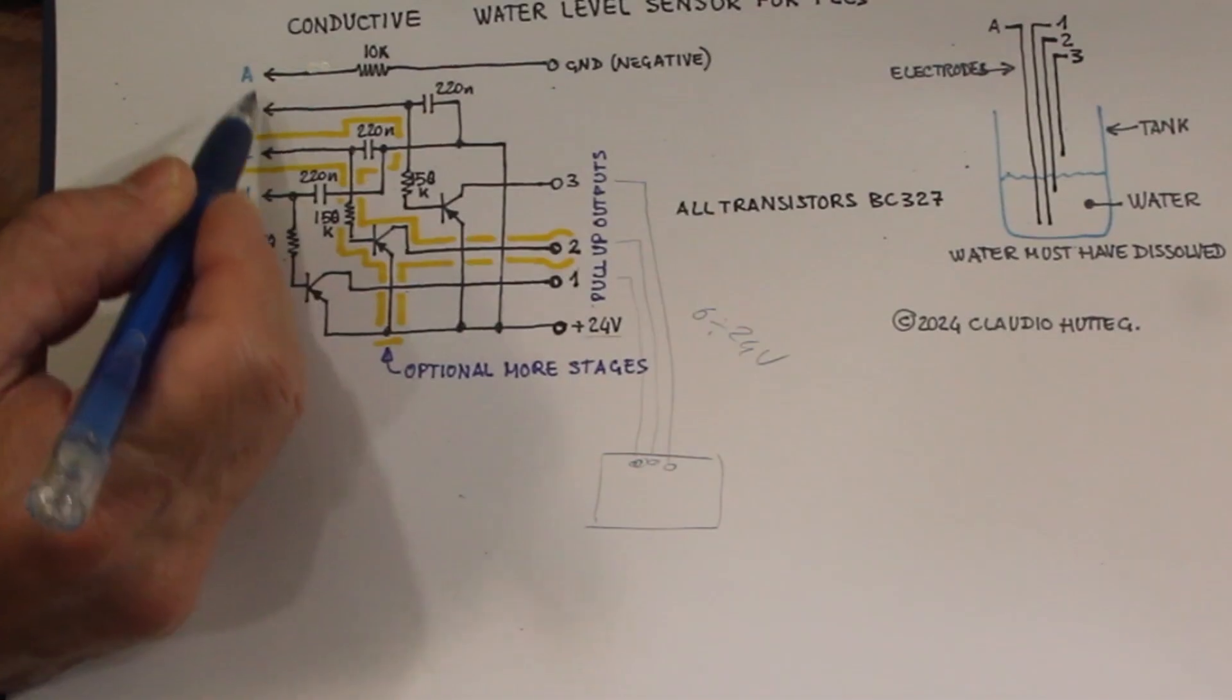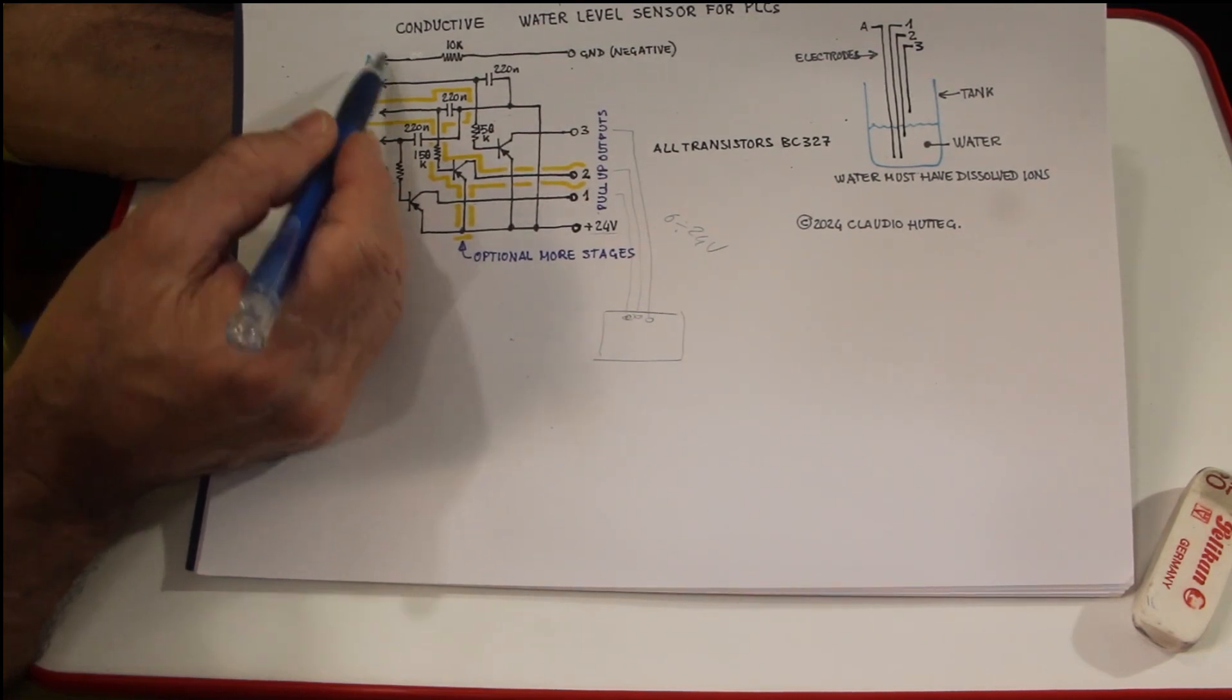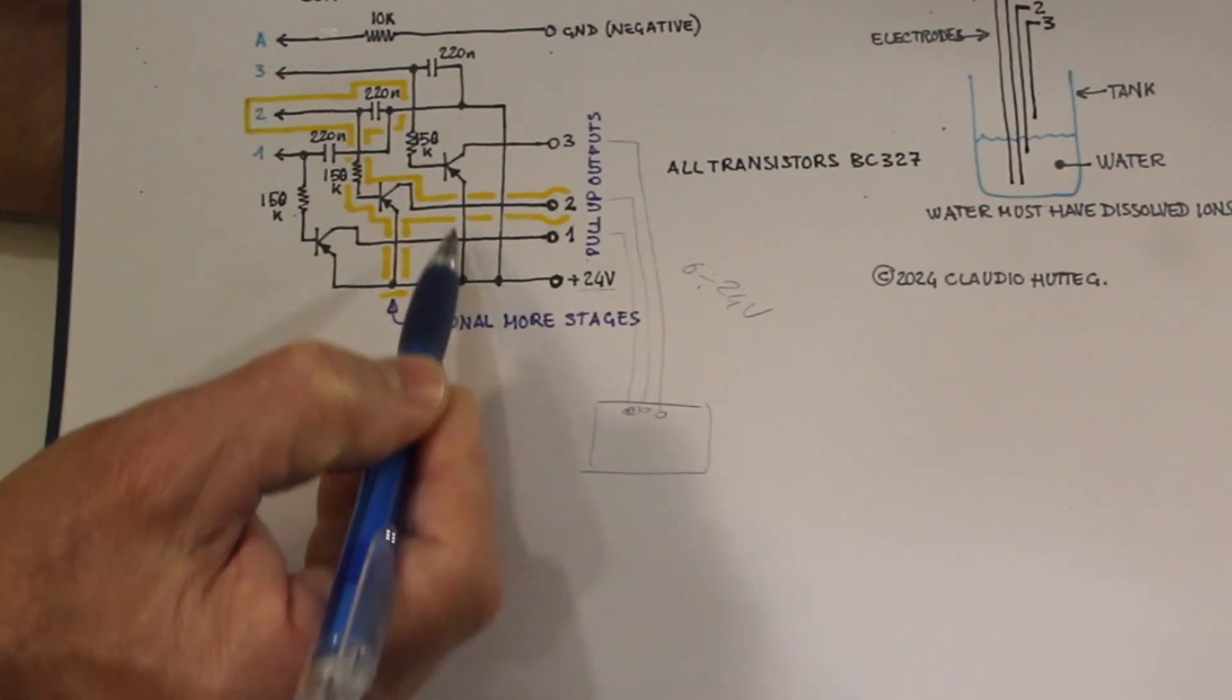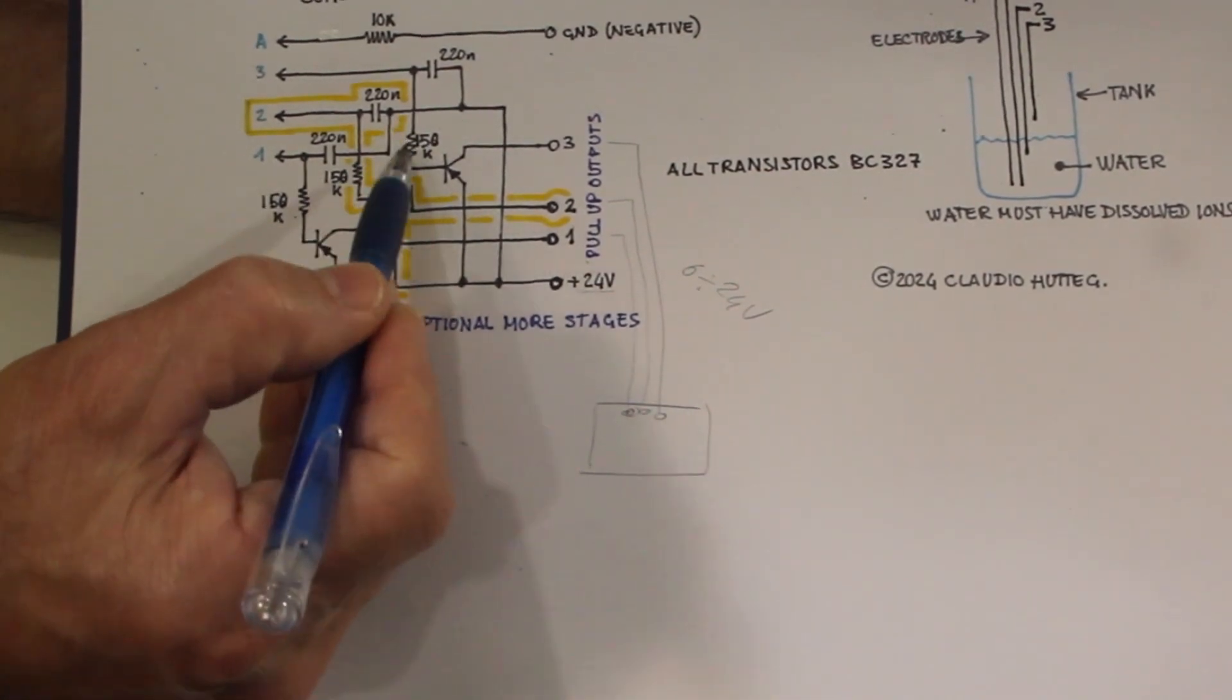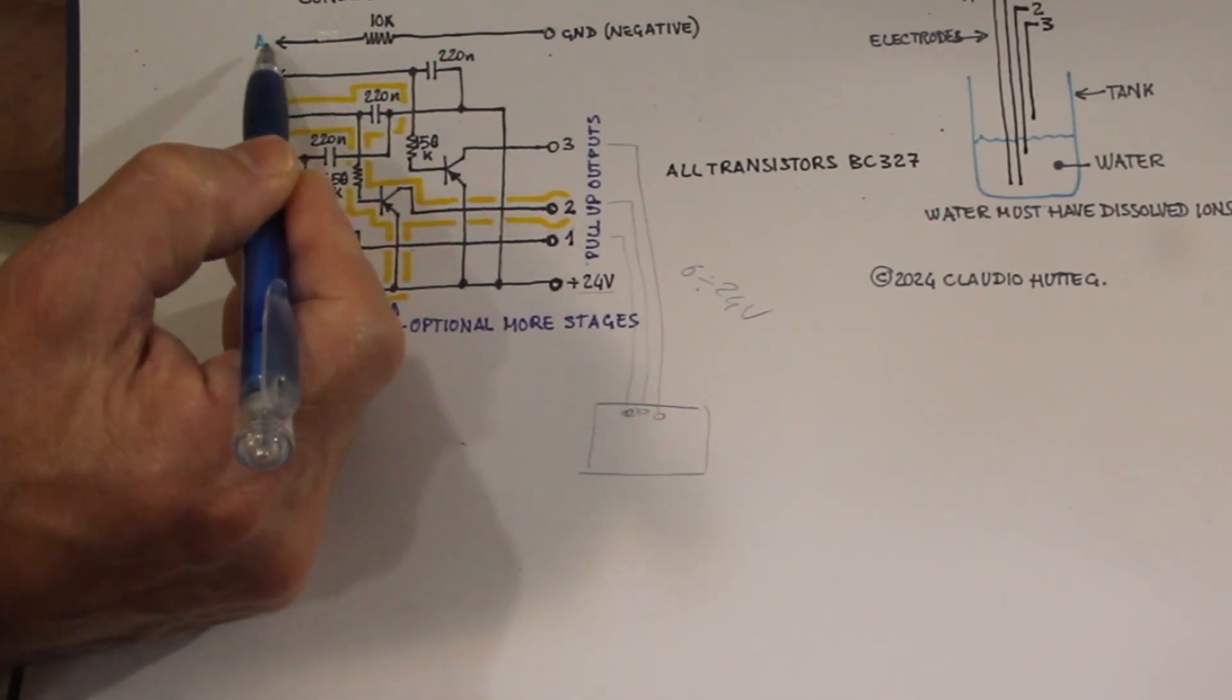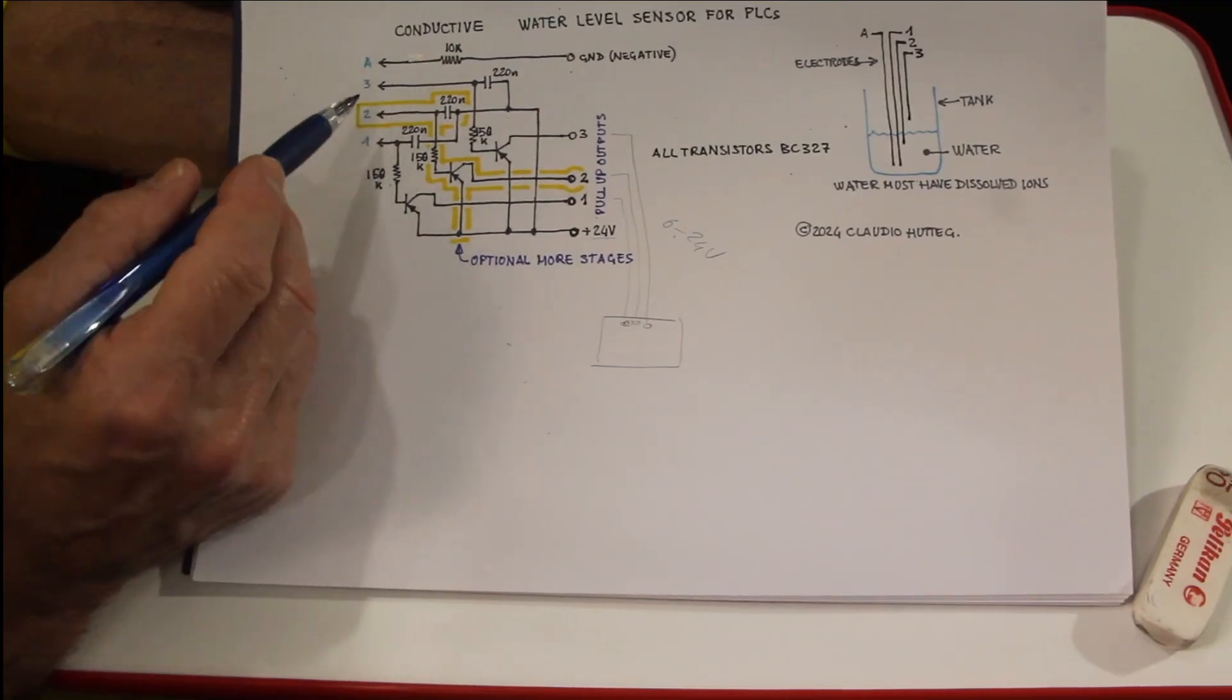So what happens here, when this electrode is in contact with the common, for example, because the water touches these two electrodes, here a current will flow from the emitter of this transistor, through its base, and across this resistor, 150K, that goes through the electrode and the water, and back through this resistor, toward negative.